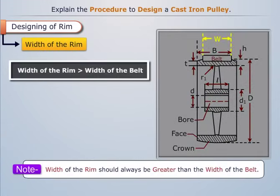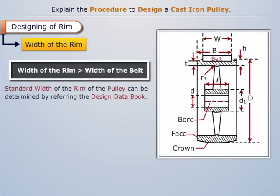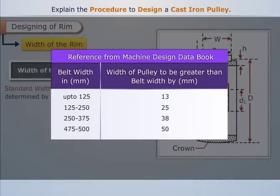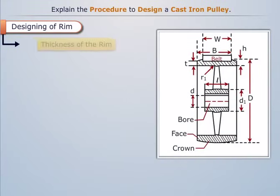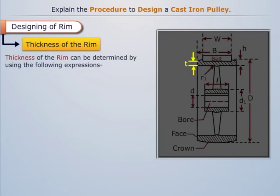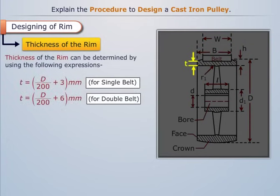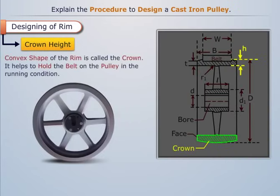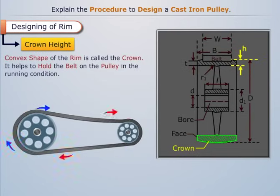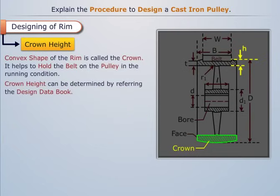The standard width of the rim of the pulley can be determined by referring to the design data book. The thickness of the rim can be determined by using the appropriate expressions. The convex shape of the rim is called the crown — it helps to hold the belt on the pulley in the running condition. Crown height corresponding to the pulley diameter can be obtained by referring to the design data book.